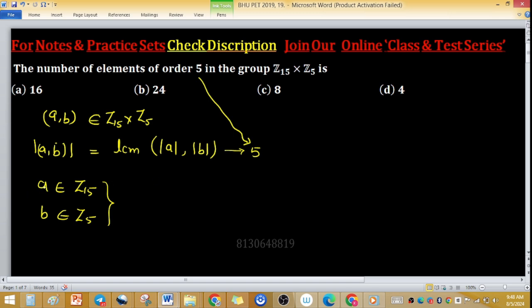We are seeking those elements where the LCM gives us 5. So the possibilities are: order (1,5), order (5,1), and order (5,5). These are the three possibilities when we get LCM = 5.